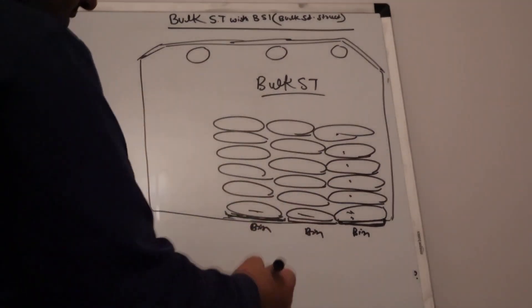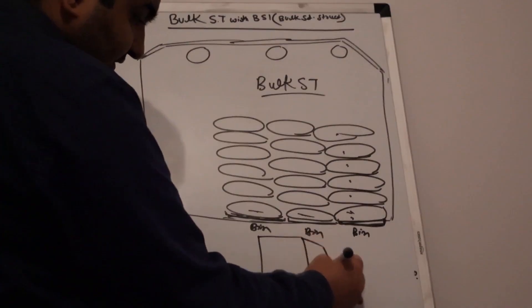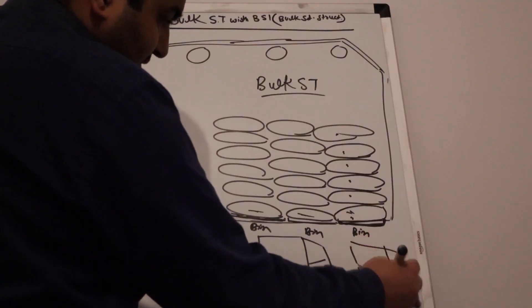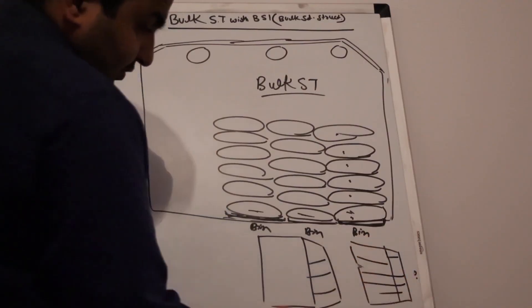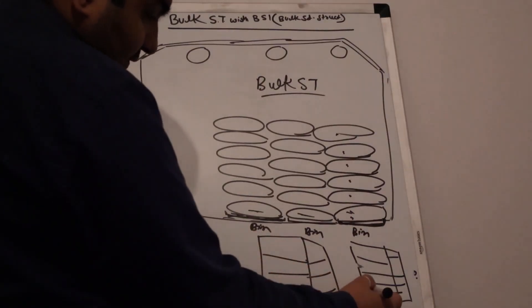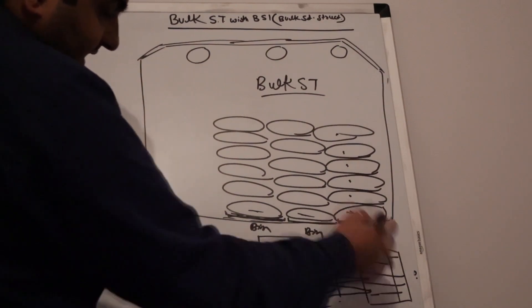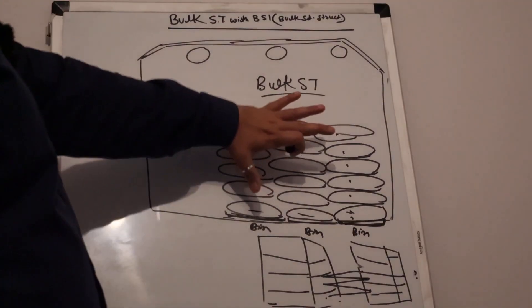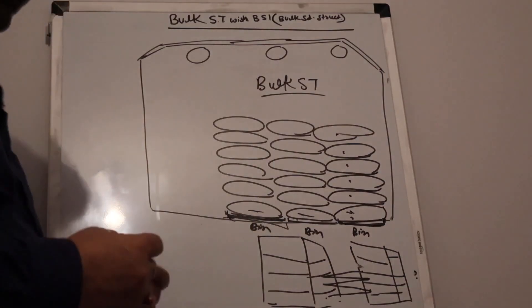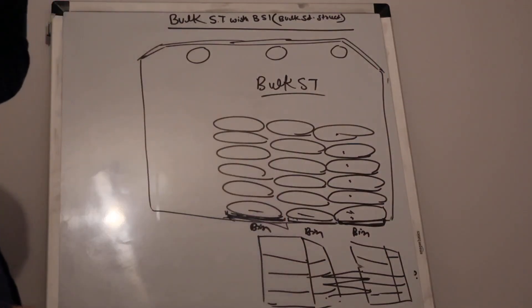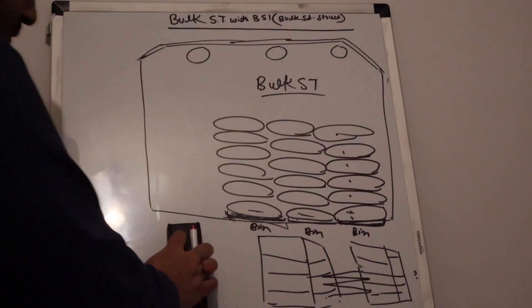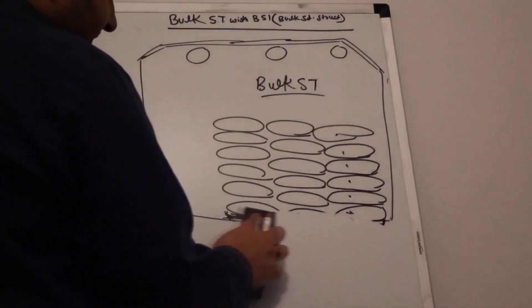Generally in the warehouse we have storage types — for example, two storage types in front of each other. We define the bins as stack one, stack two, stack three, stack four, stack five in a zigzag arrangement. This entire area is considered as storage bins, and in that situation we use the bulky storage type. This is the demo for bulk storage type with complex configurations.